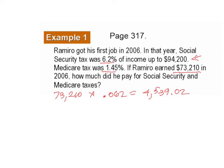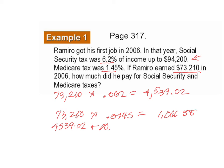We do the same thing for Medicare. We multiply his entire income times 1.45% as a decimal, so this is 0.0145, and that equals about $1,061.55. To get how much he paid total, we add them together — he paid $5,600.57.